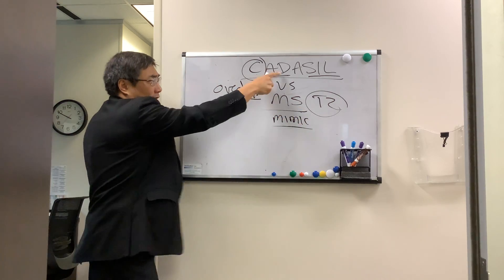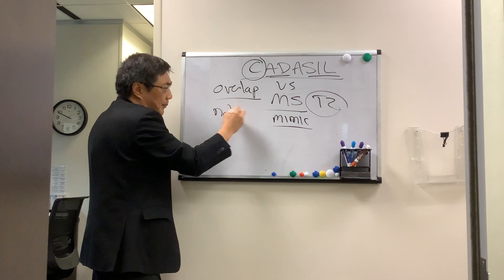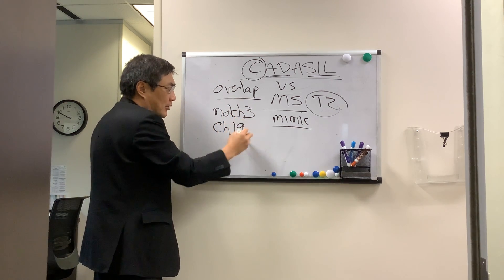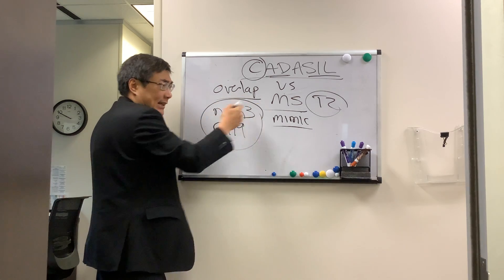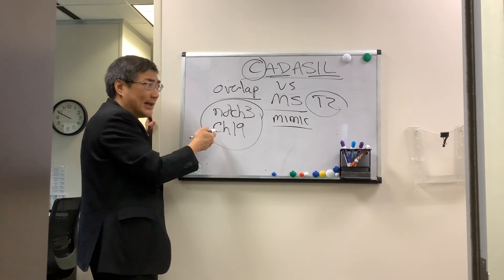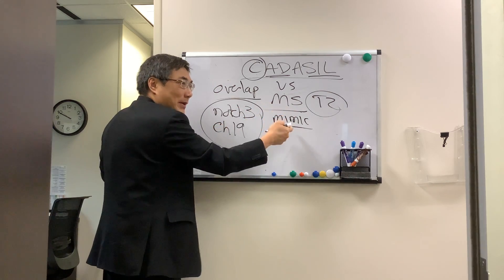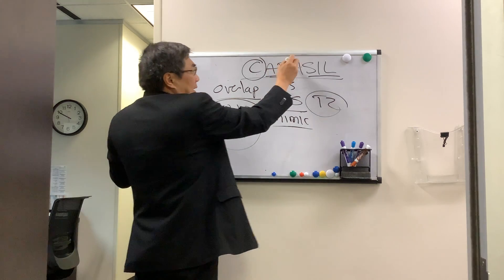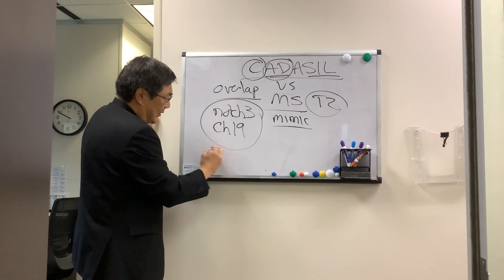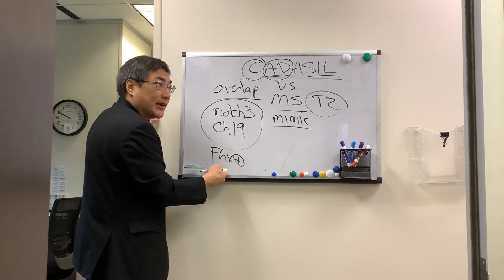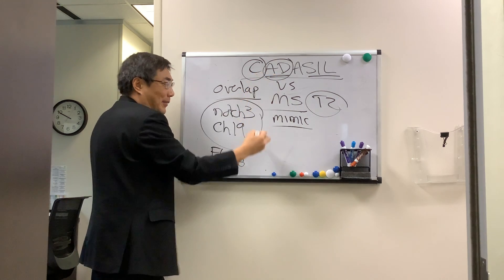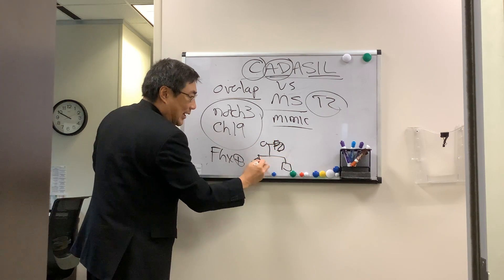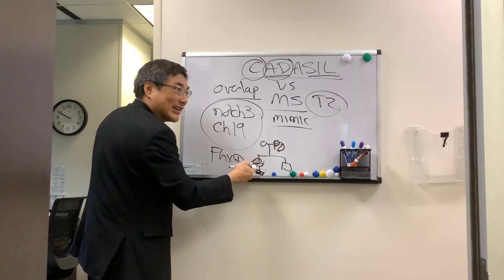CADASIL is autosomal dominant, caused most commonly by a gene defect in NOTCH3 on chromosome 19. Testing with a targeted hereditary genetic test for MS mimic or atypical MS is how you make the diagnosis of CADASIL. Because it's autosomal dominant, family history is very important — an autosomal dominant pedigree makes it a lot easier to make the diagnosis.